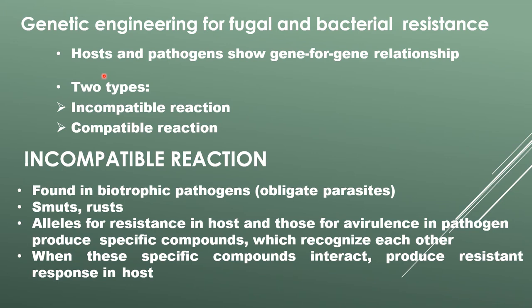Genetic engineering for fungal and bacterial resistance: host and pathogen show a gene-for-gene relationship. There are two types of reactions: incompatible reaction and compatible reaction. The incompatible reaction is found in biotrophic pathogens.